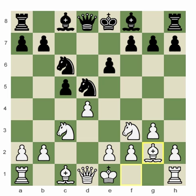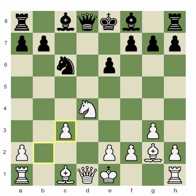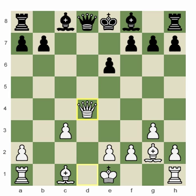So black played pawn takes d4, and white continues with knight takes, knight takes c3, pawn takes c3. Black continues to liquidate on d4 — knight takes, queen takes — and in this position black goes into the endgame with queen takes d4.